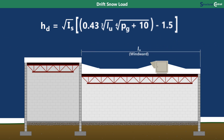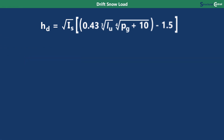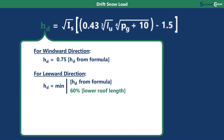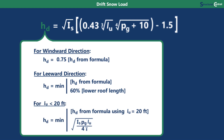So for elevation-change conditions, you need to determine HD in both directions and design for the larger value. When determining HD, account for the following adjustments and limits: if the wind is in the windward direction, include a 0.75 factor since windward drifts trap less snow than leeward drifts. For leeward direction, the drift height is limited to 60% of the lower roof length. If the upwind length is less than 20 feet, the formula produces unrealistic values, so use an LU value of 20 feet instead. This height is then limited by the formula shown, which assumes 50% of the snow on the roof gets trapped.